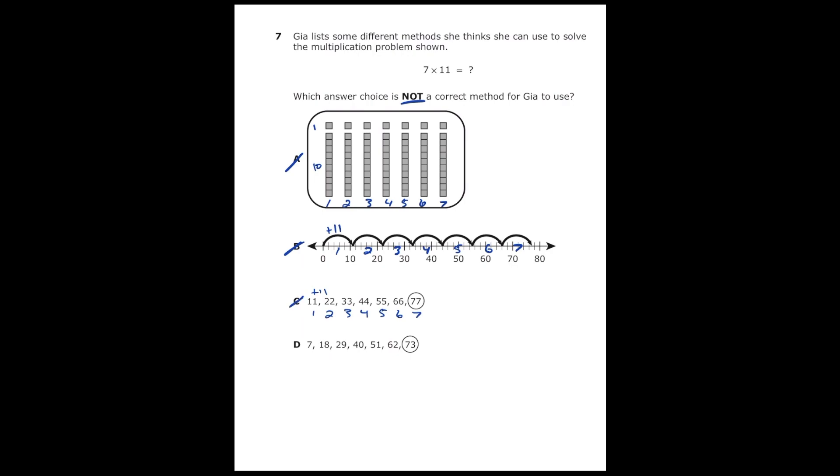And then letter D, we're starting at seven, and they are adding by 11 each time, but you can see their circled answer is 73, which is not correct. So letter D is going to be our answer.